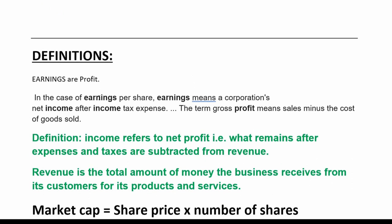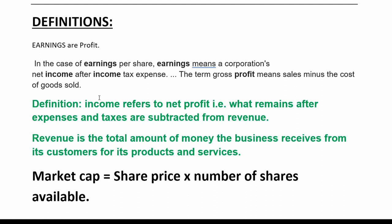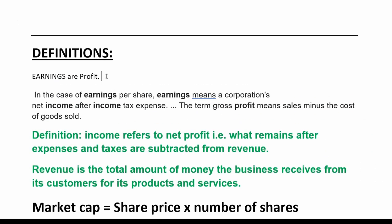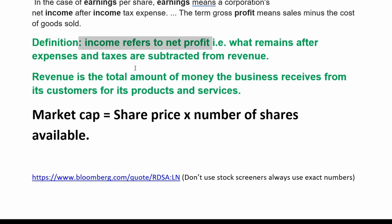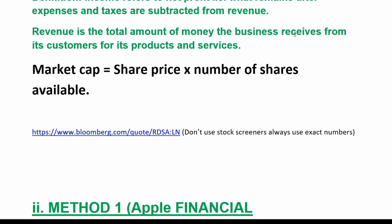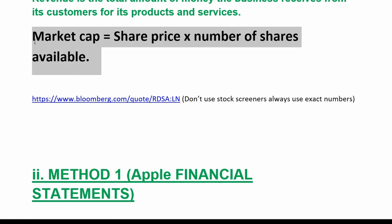I'll go through a few definitions, because a lot of people do these calculations without understanding what the terms mean. Earnings are profit. Earnings per share means the corporation's net income after income tax expenses. Gross profit is sales minus cost of goods sold. Income refers to net profit — after expenses and taxes — which is what the income statement shows. Revenue is the total amount of money the business receives from its customers for its products and services, i.e., turnover. Market cap is share price times the number of shares available.